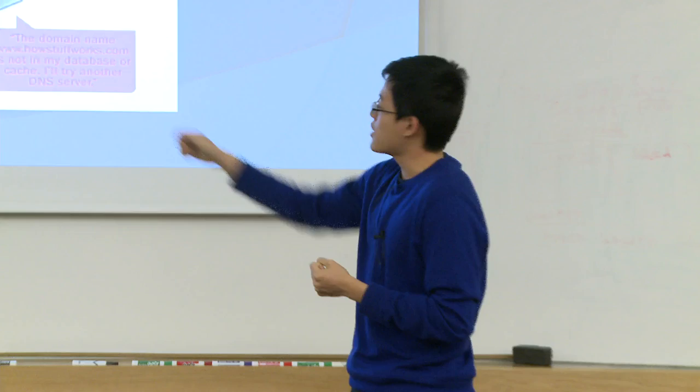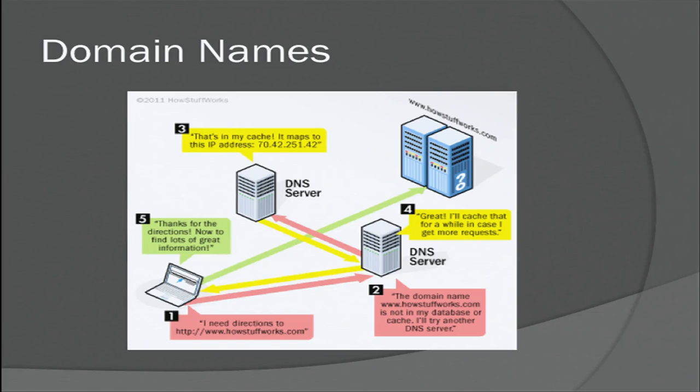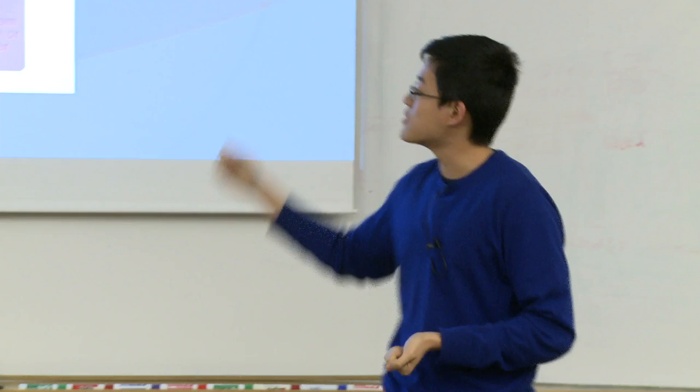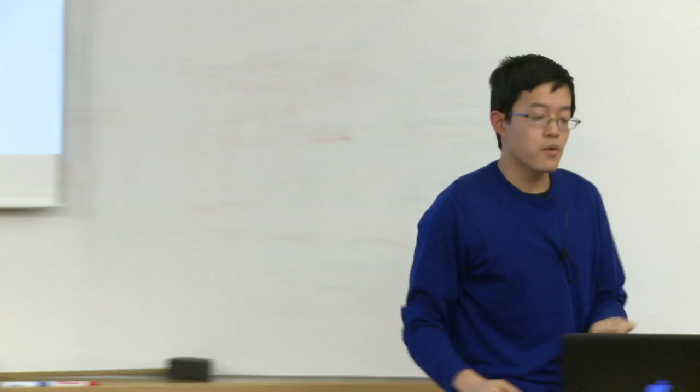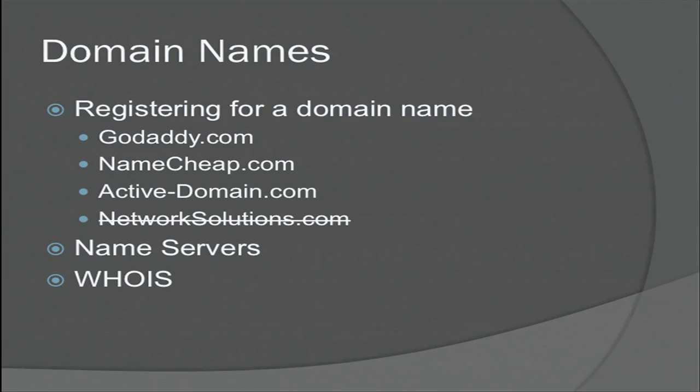Do you know the IP address of www.howstuffworks.com? Your DNS server might say yes, I do. In that case, you get the IP address and your computer accesses that IP address. If it does not, it asks another DNS server. That server might say yes, I do. So it tells the other one what it is, and finally that information gets passed to your computer, and you can access howstuffworks.com. So how can you get one of these magical things? How can you get maybe www.yourname.com or www.ilovecats.com?